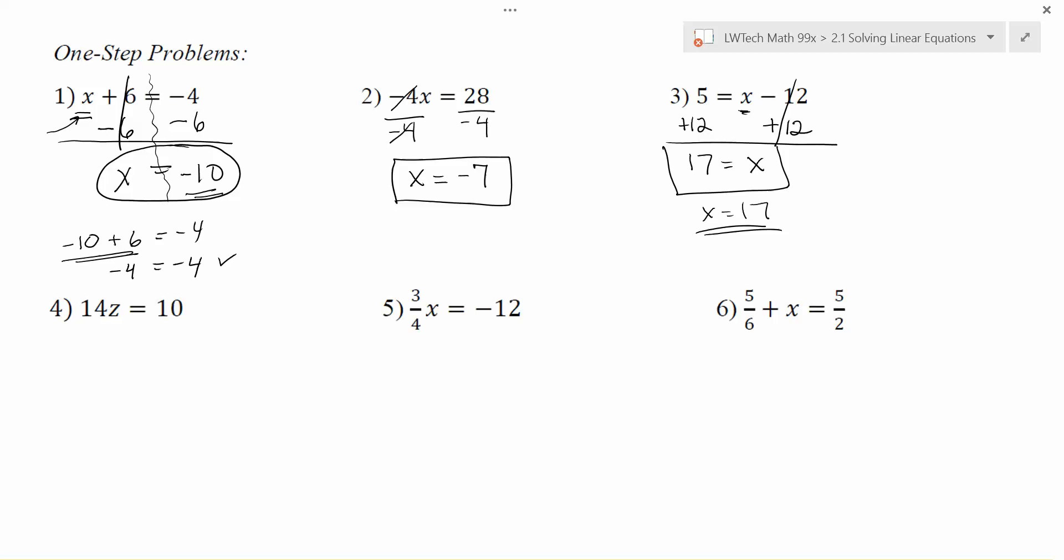With problem number four here, we want to get the z by itself. So we look at what's going on on the same side of the equation as the z, so we can get rid of it. Right now, it's being multiplied by 14. So to get rid of it, I'm going to divide by 14. If I do this on one side of the equation, I also have to do it on the other side.